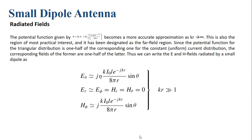The electric and magnetic fields of the small dipole are half those of the infinitesimal dipole. The denominator becomes 8πr instead of 4πr. E_r, E_φ, H_r, and H_θ are all equal to zero, while H_φ is also multiplied by 1/2, becoming 1/(8πr).